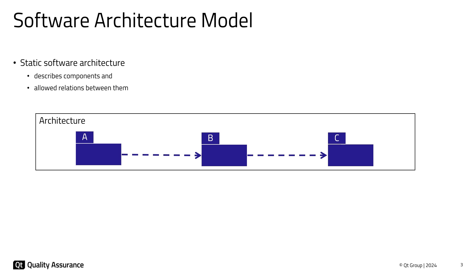A software architecture is normally described by a graphical model. We restrict ourselves to static software architecture here. The model describes components and allowed relations between these components. In the example here, we see three components A, B and C, and we have edges or dependencies between them. There is an edge from A to B, meaning that software component A can access software component B, and software component B can access software component C.